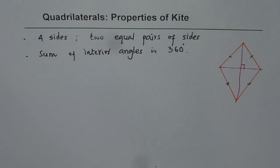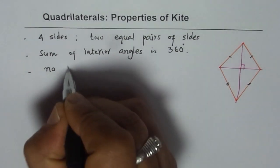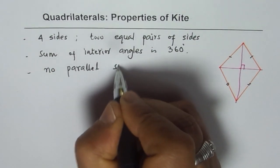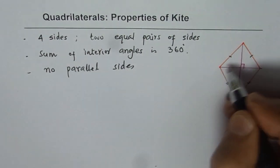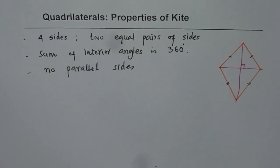Now in a kite, do we have parallel sides? It has no parallel sides. That is very important to understand. So these sides may look parallel here, but they are not indeed parallel. So kites do not have parallel sides. This is very important to understand.